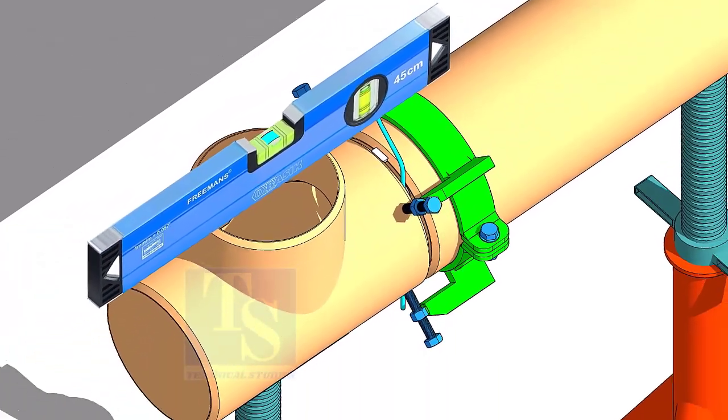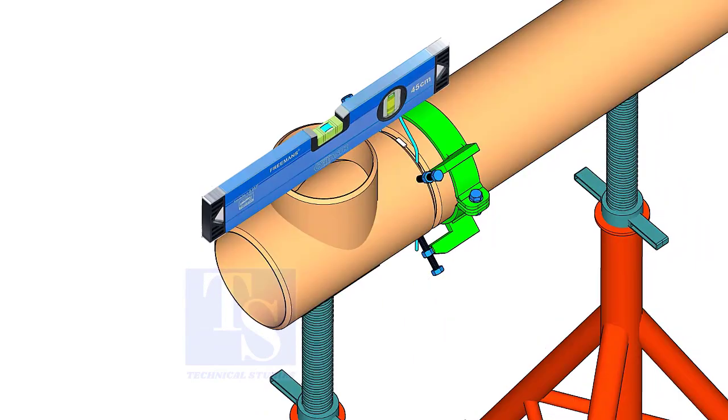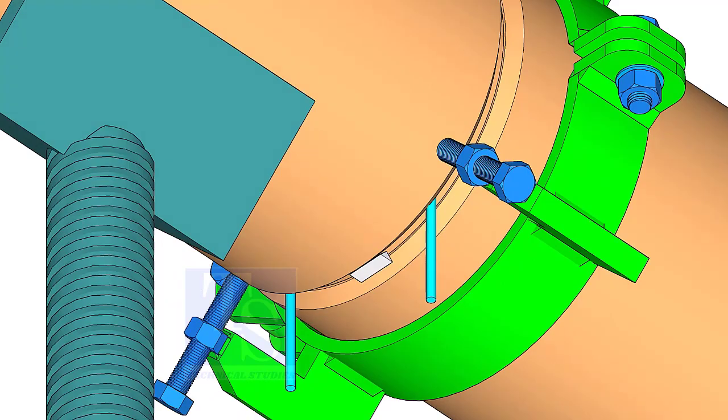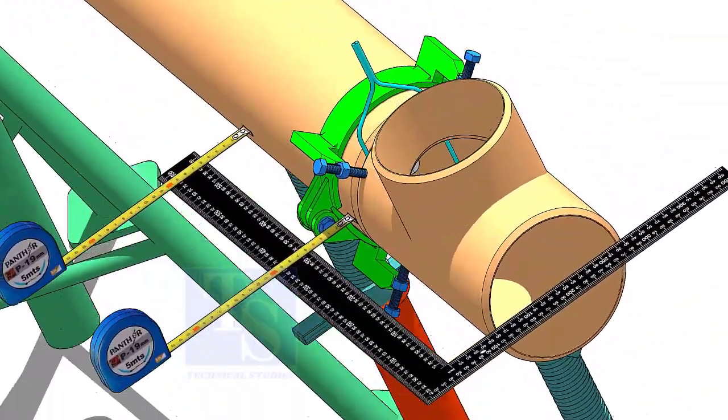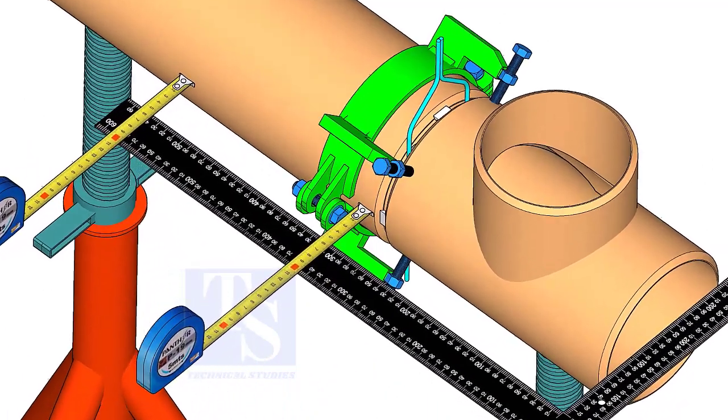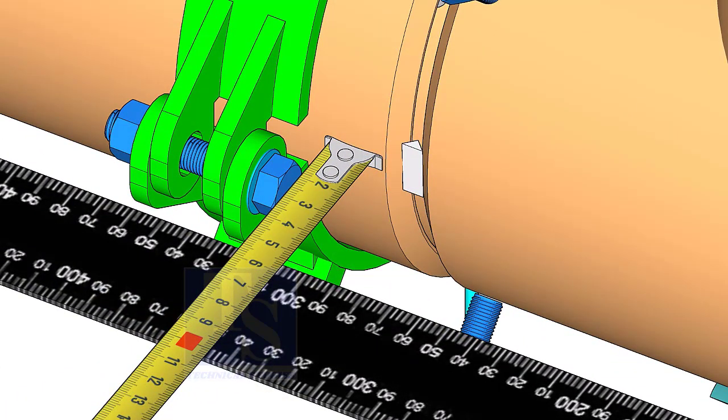Correct the level of the T longitudinally and tack weld on the bottom of the joint. Make the side of the T parallel to the pipe and tack weld on both sides of the joint.